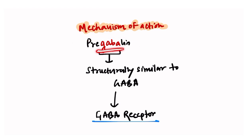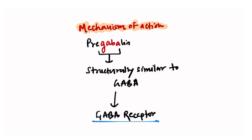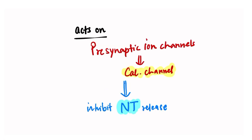As we can see, GABA is written in the name of pregabalin, and often we think that it has something to do with the GABA receptor. But actually it has nothing to do with the GABA receptor. It is structurally similar to GABA, and that's why it is called pregabalin, but it does not act on GABA receptors.